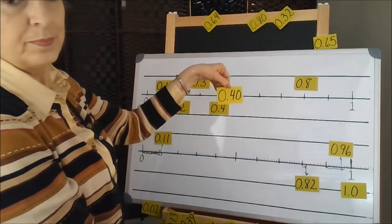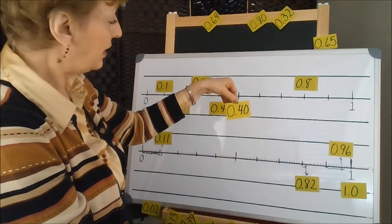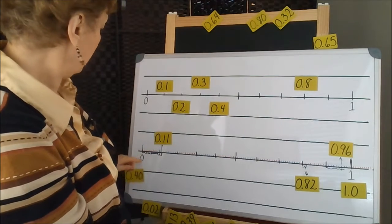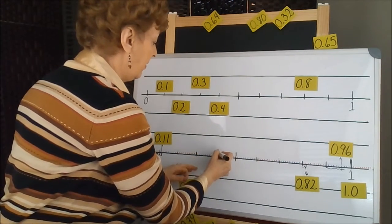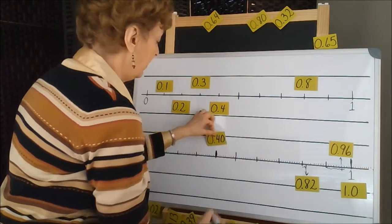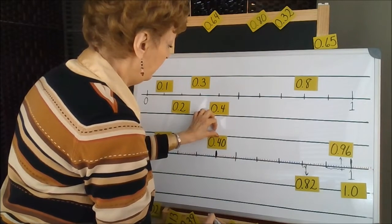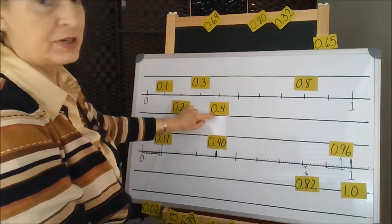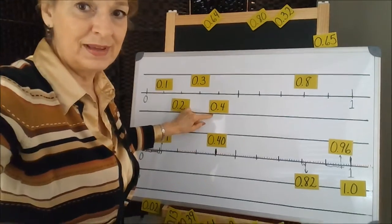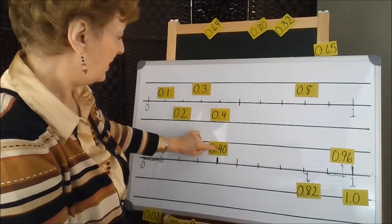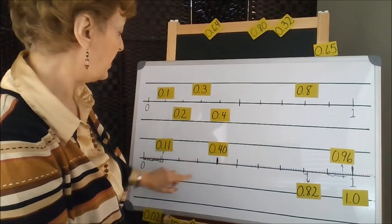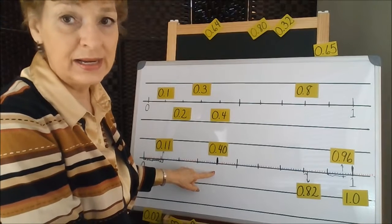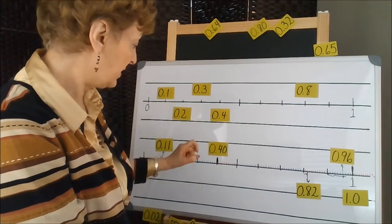How about 0.40, 40 hundredths? 10, 20, 30, 40 right here. Or 4 tenths. It's the same. It would be the same number. See, our 4 is in the tenths column, and this extra 0 is just saying that we've measured into the hundredths position.